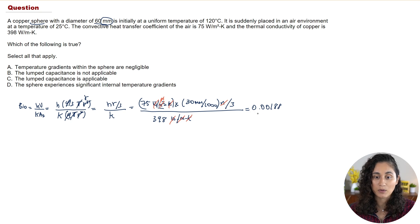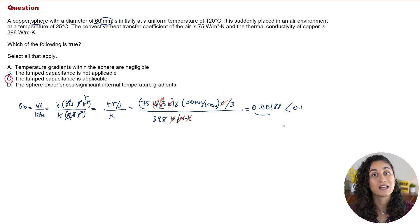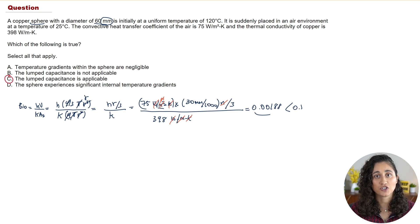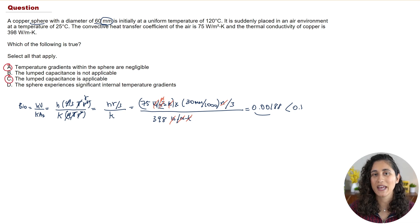Comparing 0.00188 to 0.1: since the Biot number is less than 0.1, lumped capacitance is applicable — so option C is correct. Also, when the Biot number is less than 0.1, the temperature variation within the object is small enough to be negligible, making option A correct as well. So the answers are A and C. This is a great FE problem covering a lot of key concepts.